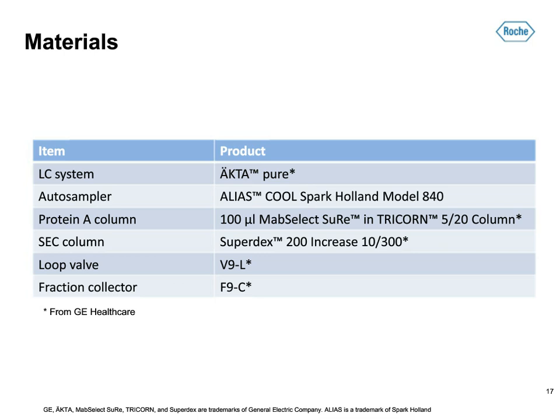As the size exclusion column, we are using the 10/300 Superdex 200 Increase from GE Healthcare, which allows us to run at higher flow rates than a normal S200 column, saving a lot of time. The loop valve allows the connection of five loops; we just need two. Before we got the F9-C fraction collector, we had the carousel fraction collector F920. Compared to the F920, the F9-C allows almost 600 fractions of 2 ml to be collected.